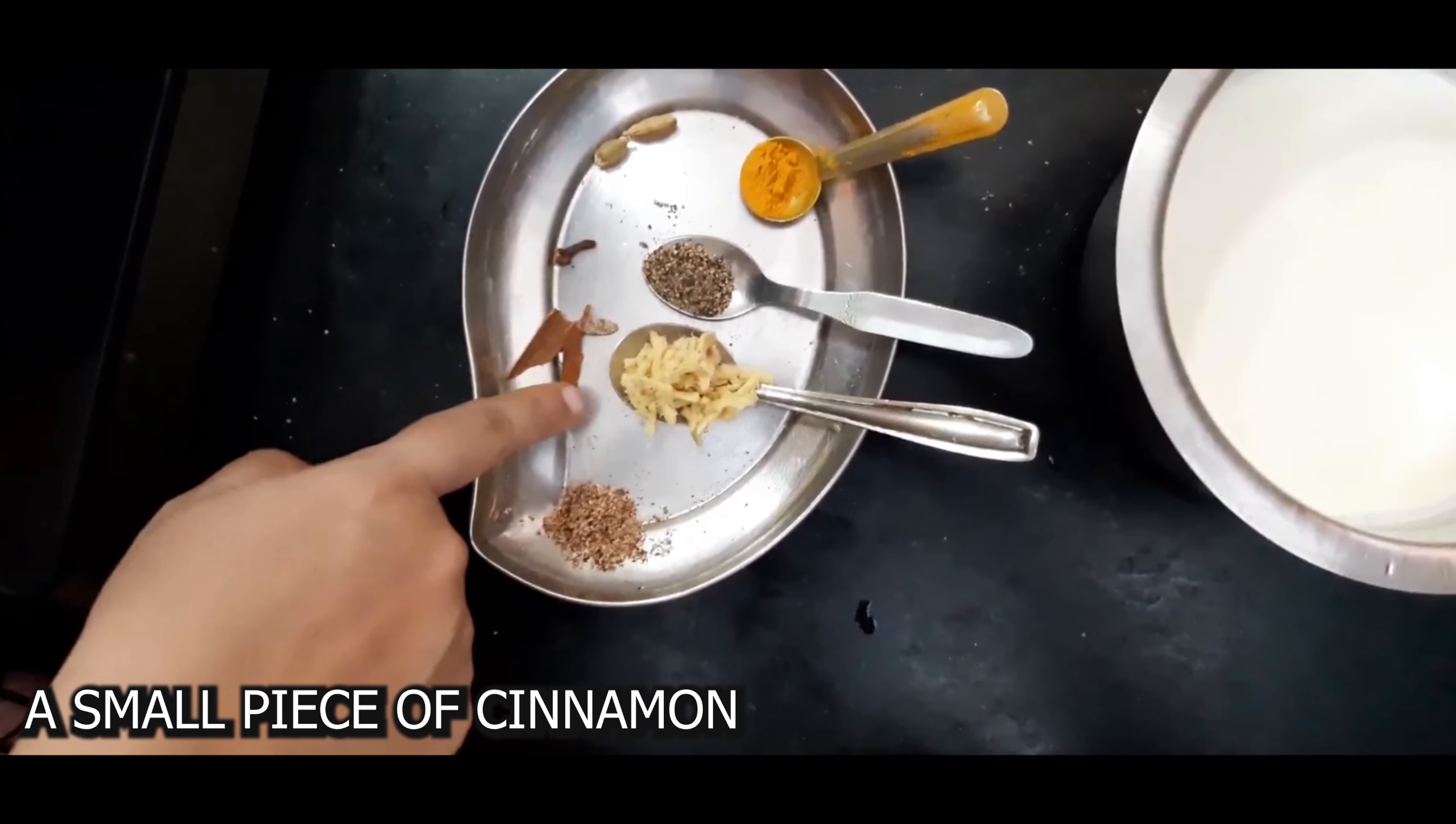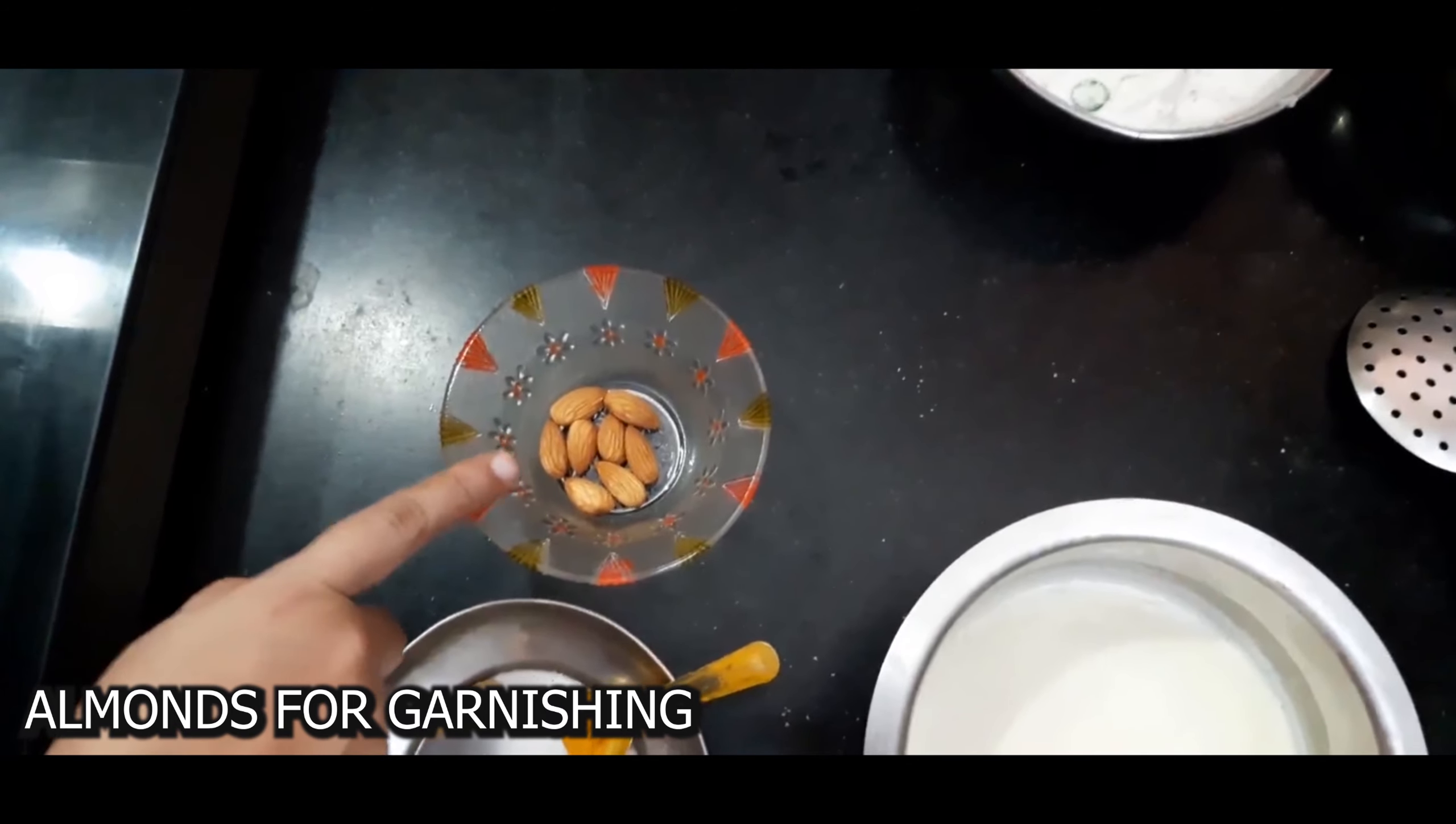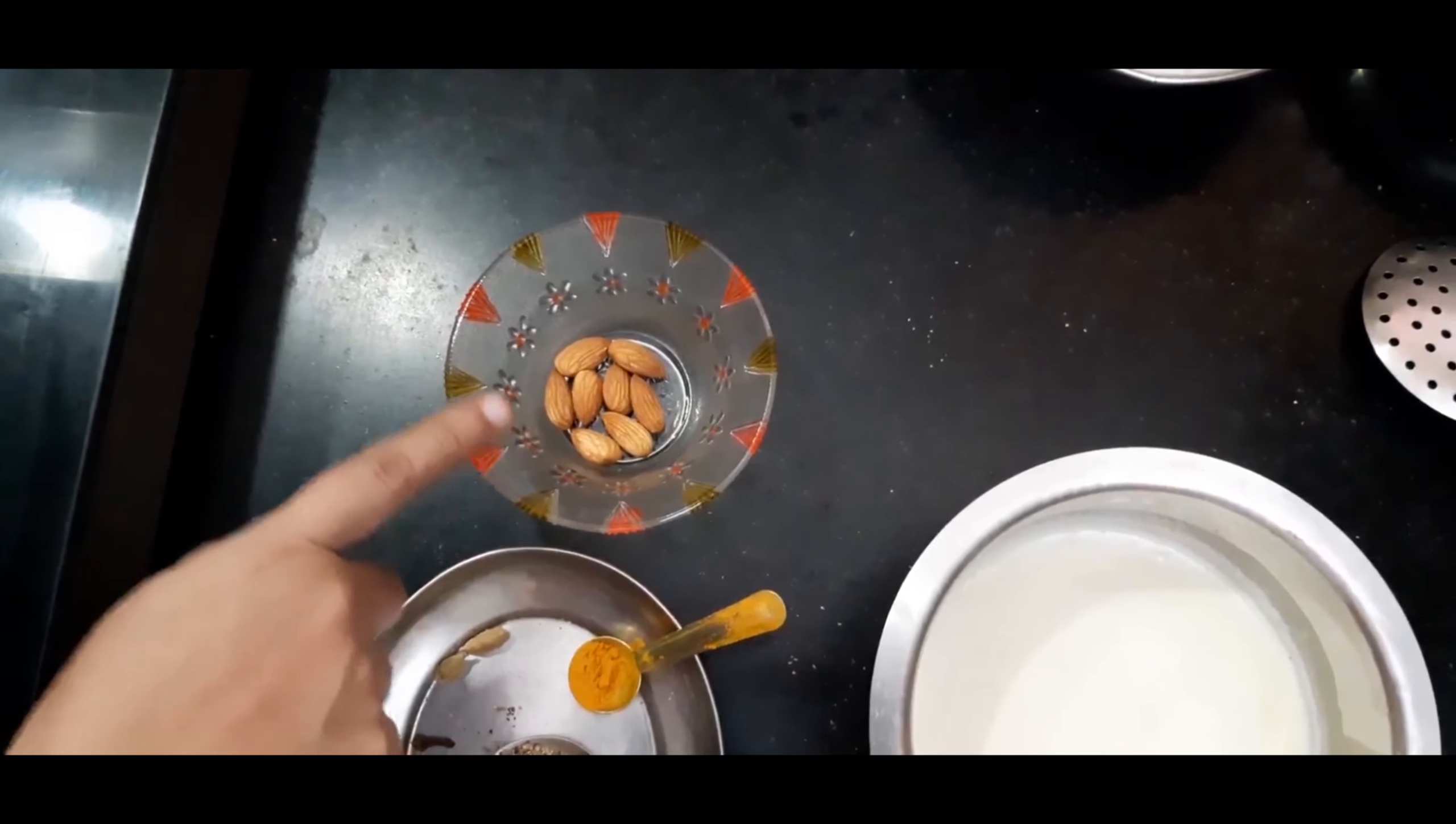A small piece of cinnamon, one clove and two cardamoms. These almonds are only for garnishing. I will slice them thinly.